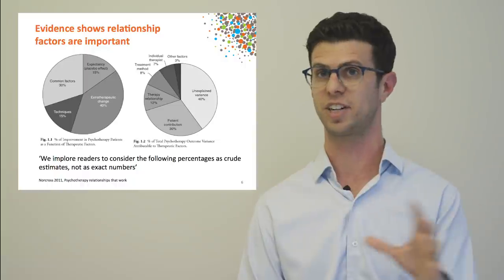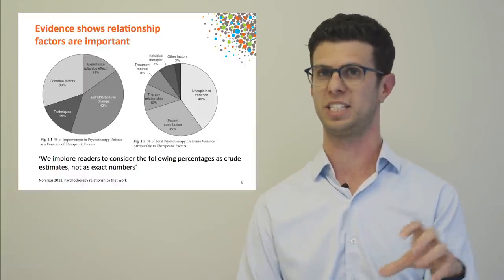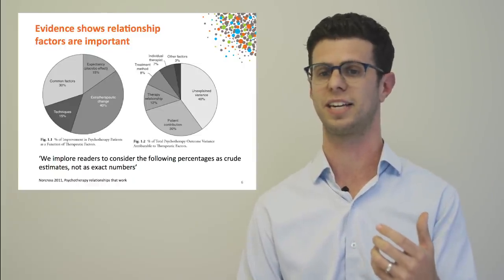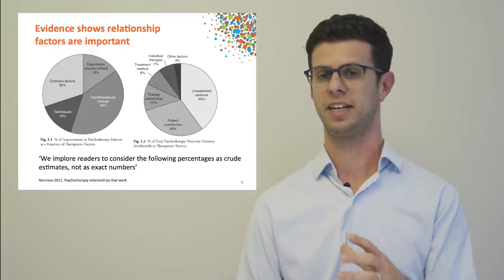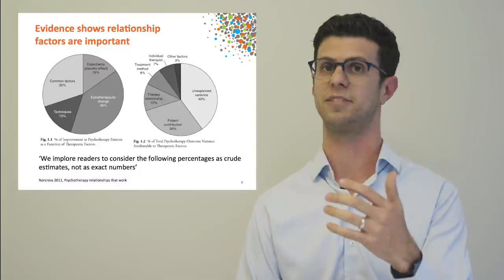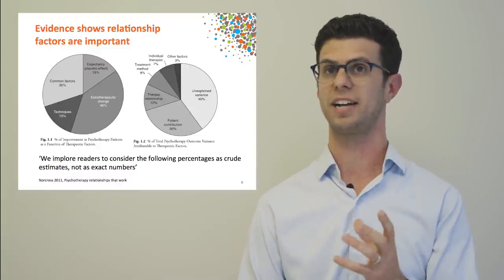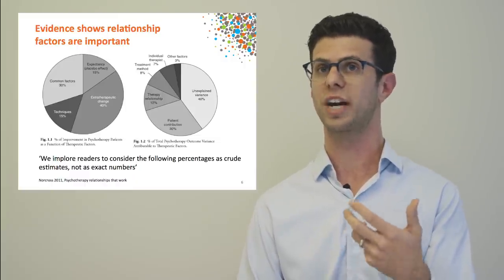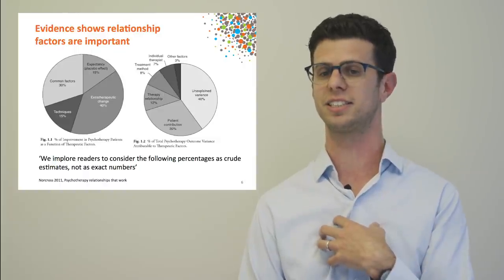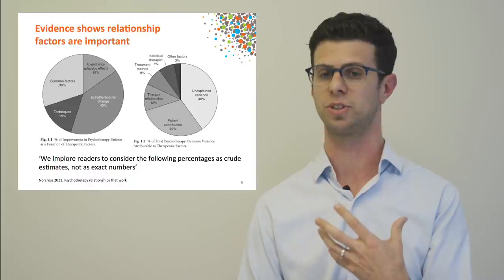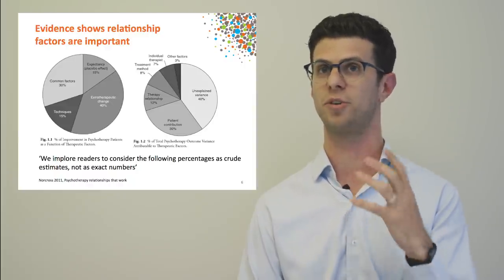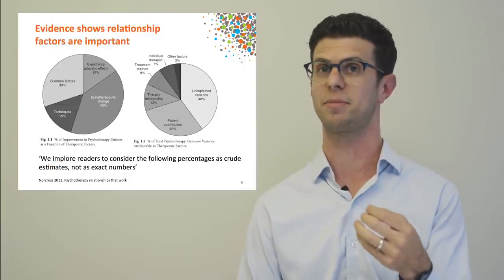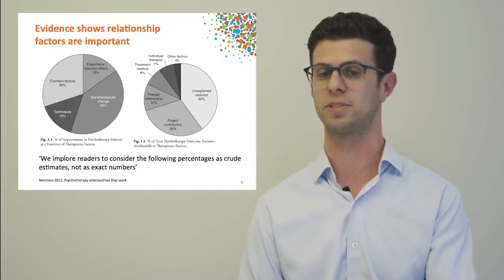This has led researchers and clinicians to ask: what are the common mechanisms driving therapeutic change? The most promising candidate is the therapy relationship. Common factors that cut across different treatments actually account for more change than specific techniques within treatments — for example, cognitive restructuring in CBT. In terms of variability in outcomes, the therapy relationship seems to account for more variability than specific treatment methods, giving us an opportunity to think carefully about therapy relationships.